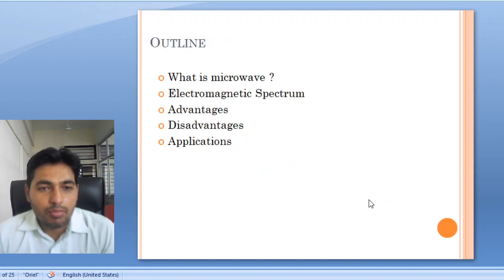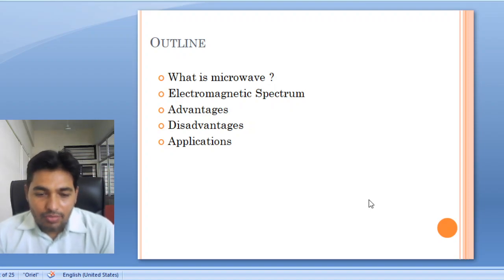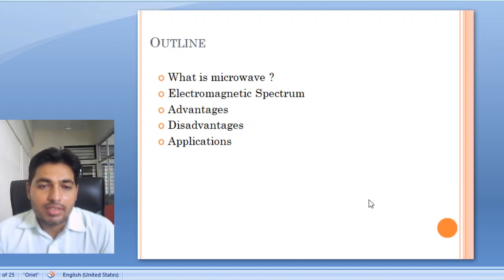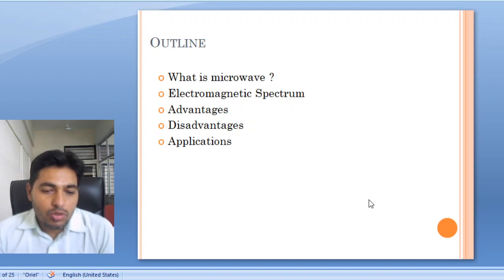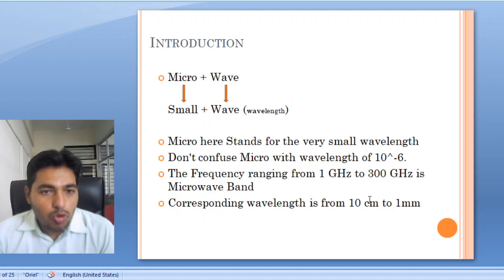What does microwave mean? Microwave actually stands for: micro means a very small or tiny thing. So in a wave we have either amplitude, frequency, or in other terms we can say all waves will have some wavelength. The wave which will have a very small wavelength is called microwave.